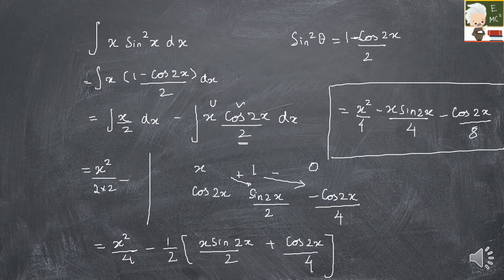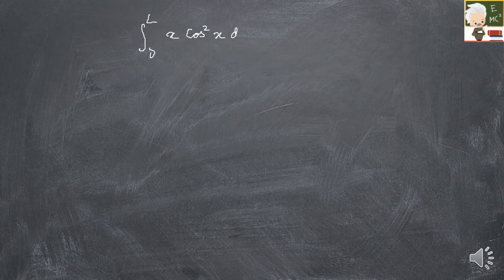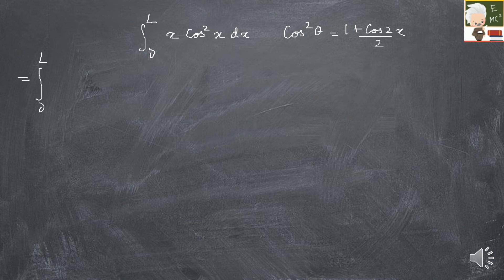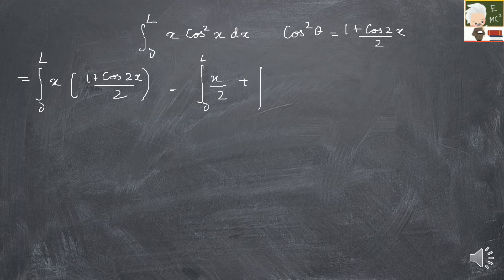Now we apply limits. The next problem is: integral from 0 to L of x·cos²(x) dx. Using the trig identity cos²θ = (1 + cos 2x)/2, we substitute to get: integral from 0 to L of x·(1 + cos 2x)/2 dx. This splits into integral from 0 to L of x/2 dx, plus integral from 0 to L of x·cos(2x)/2 dx.